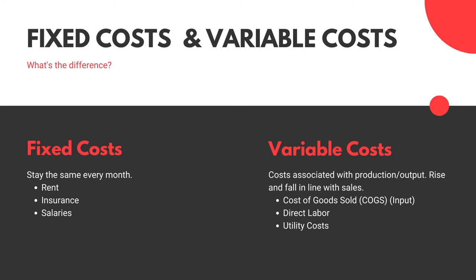Variable costs, on the other hand, go up and down — they vary based on sales and output. These are costs associated directly with production. They rise and fall in line with sales. Things like your cost of goods sold — the raw material you put in to get your product — direct labor, and utility costs. For example, if you're running a factory press five hours a day, electricity costs will be X; at 20 hours a day, they'll be four times that.